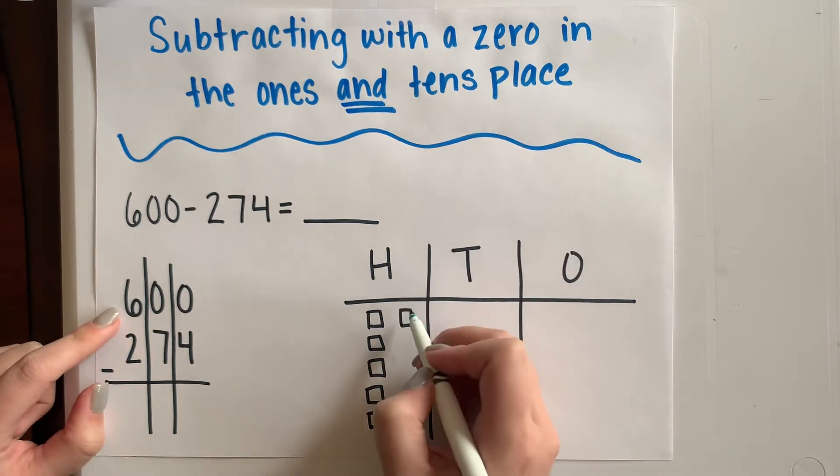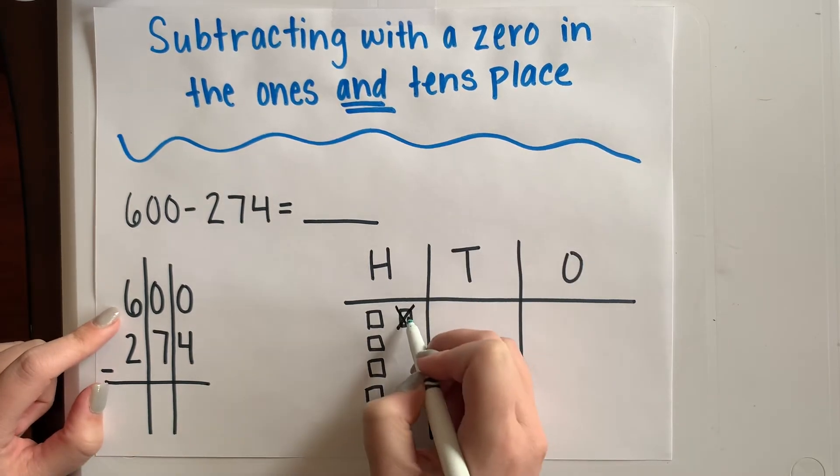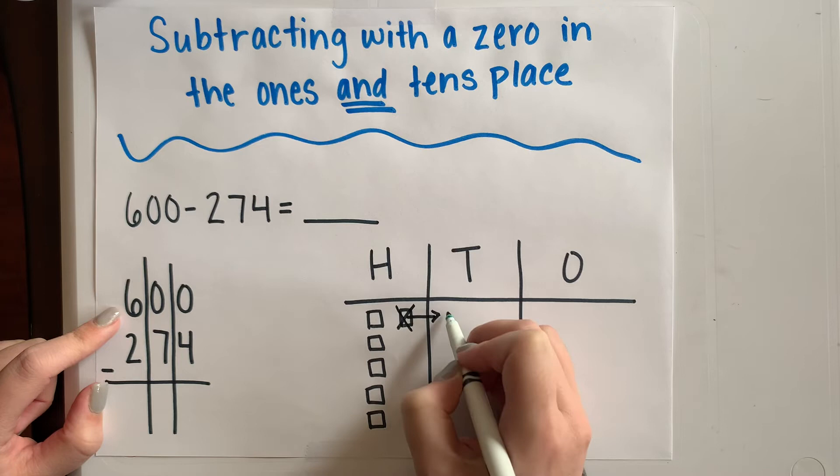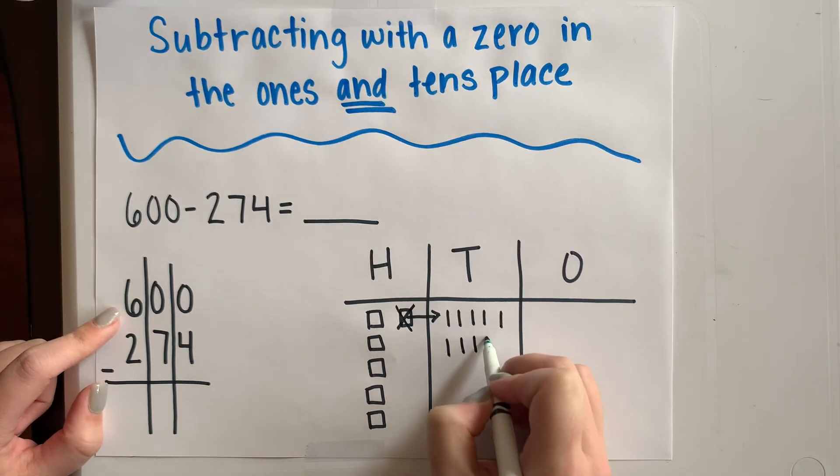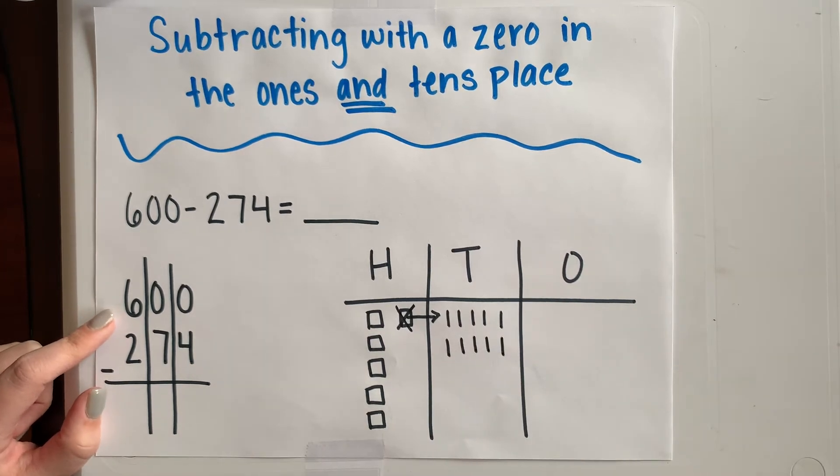Now I'm in my hundreds. I need to decompose 100 into one, two, three, four, five, six, seven, eight, nine, ten. Ten tens.